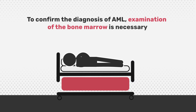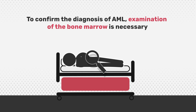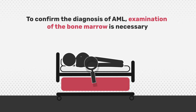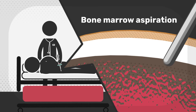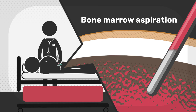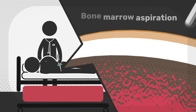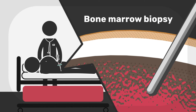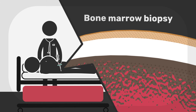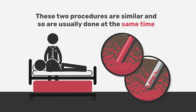To confirm the diagnosis of AML, examination of the bone marrow is necessary. This is done through two procedures: a bone marrow aspiration, where a sample of the liquid part of the marrow is taken for analysis, and a bone marrow biopsy, where a small piece of the solid part of the marrow is taken. This is somewhat more painful, but in certain cases it may be avoided if enough material is collected from the bone marrow aspiration. These two procedures are similar and so are usually done at the same time. Both samples are often taken from the pelvic bone, as this is one of the larger, more easily accessible bones.